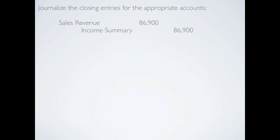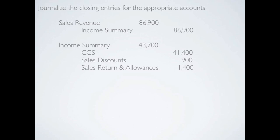Next we want to close our expenses and our contra revenues. We had one expense — cost of goods sold — and two contra revenues: sales discounts and sales returns and allowances. Those all carry debit balances, so to get rid of them we credit those accounts and debit the income summary for the total. The total of cost of goods sold and our two contra revenues was $43,700.